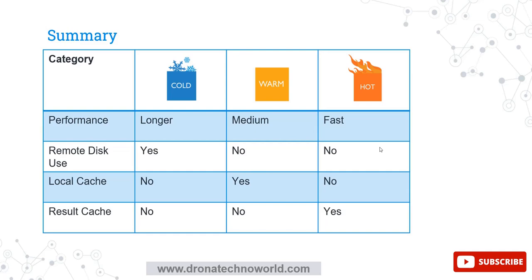The local cache is not used for the cold state, but it is definitely used for warm virtual warehouses. The result cache only gets used when the virtual warehouse is in a hot state. In short, if you use the hot virtual warehouse then your expenses will be less because it is going to use the caching from the cloud services layer.